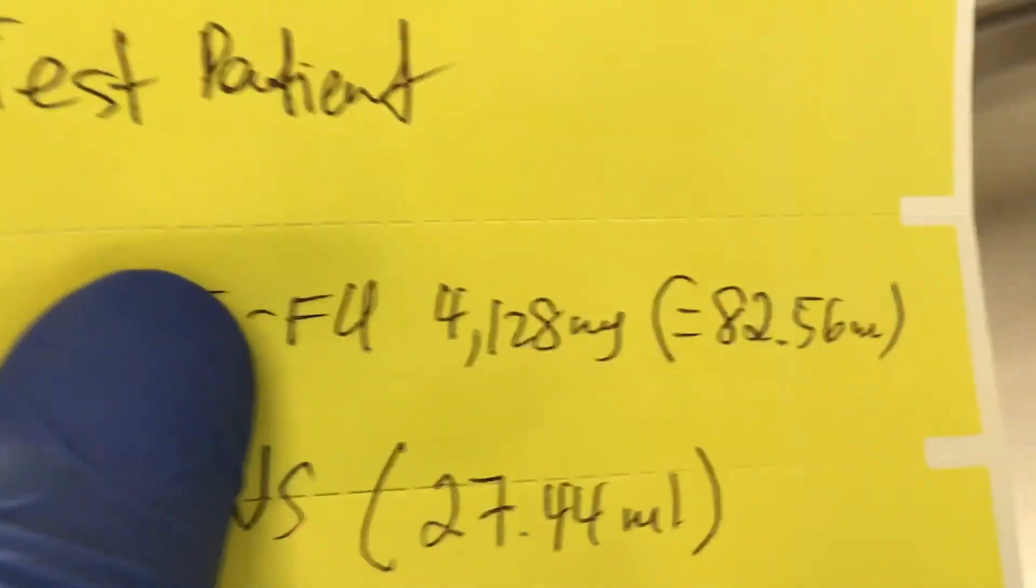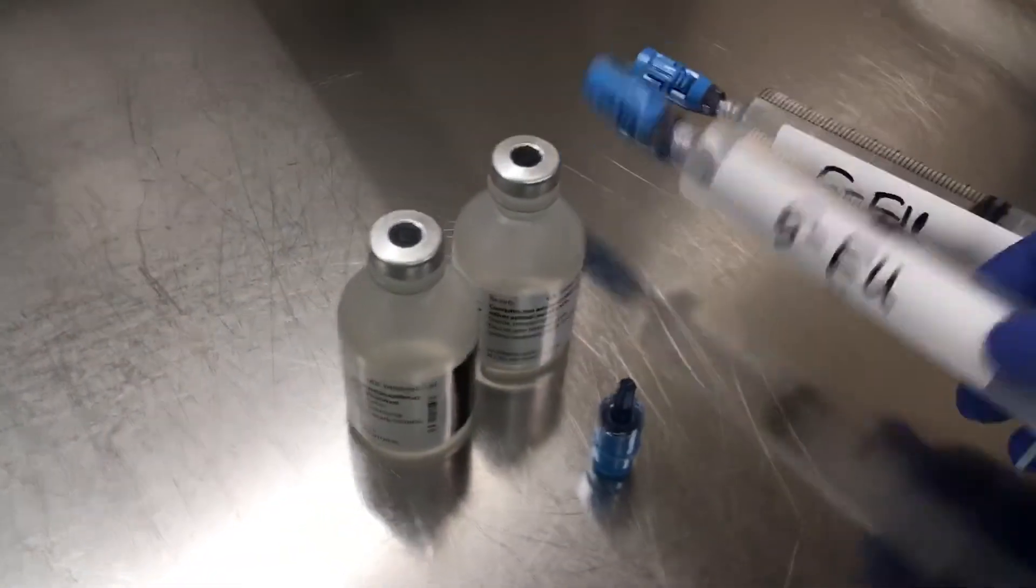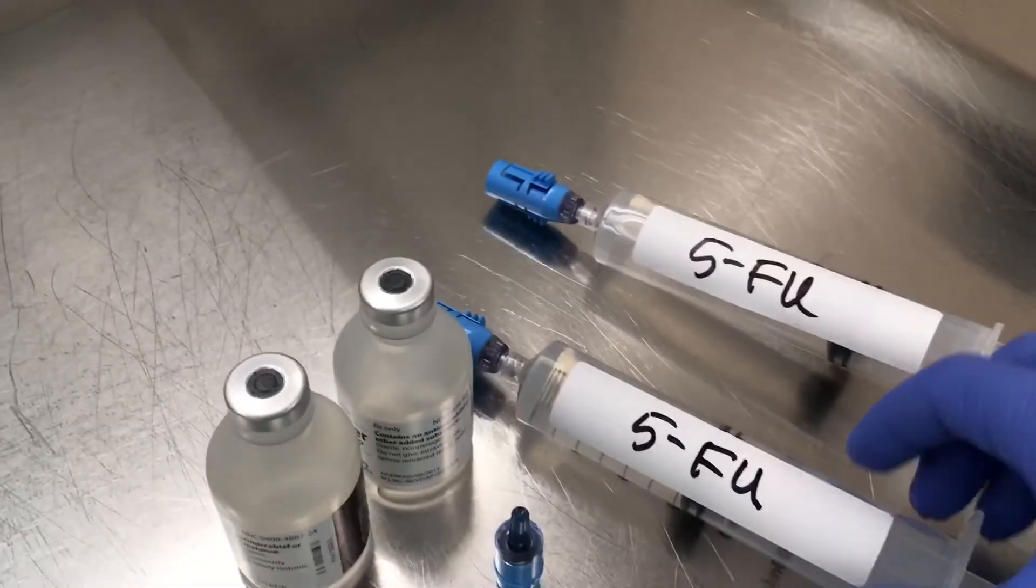Next, we're going to load 5FU. The total volume of 5FU is 82.56 ml. We have it all pre-drawn. For demonstration purposes, we use sterile water.